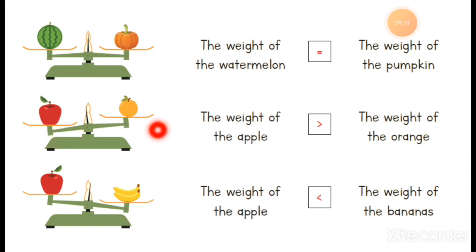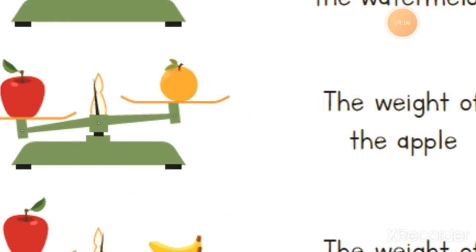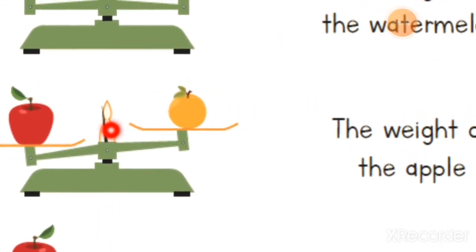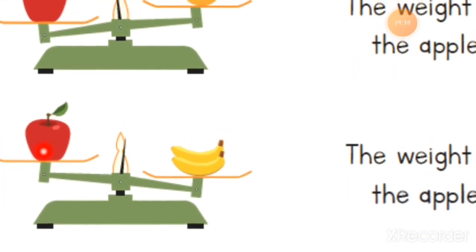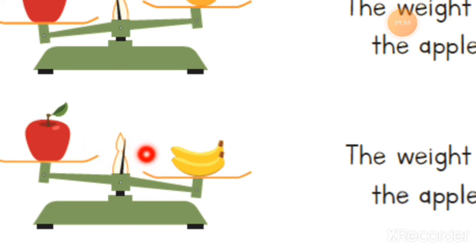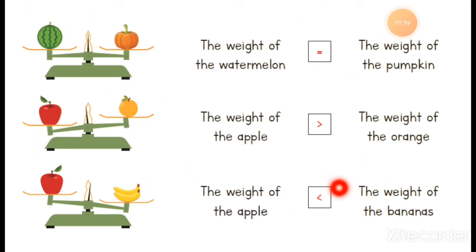Here is apple on one side and orange on the other side. The black line moves to the heavy side — the apple goes down and orange goes up. So the apple is heavier than the orange. Now, here is apple on one side and two bananas on the other. Apple is going upside and the black line moves to the banana side, meaning the weight of the bananas is more than the apple.